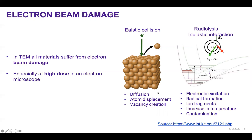It can also lead to inelastic interaction of the electron beam with the sample. It can lead to radiolysis, partly because of electronic excitation, radical formation, ion fragments, and this all leads to a local increase in the temperature of the sample, causing sample damage and at the same time contamination of the sample as well as the microscope.